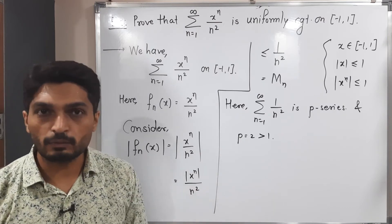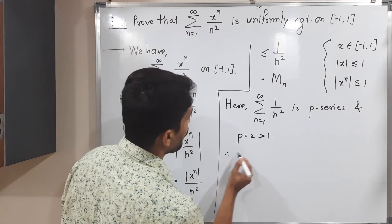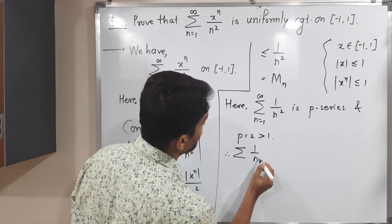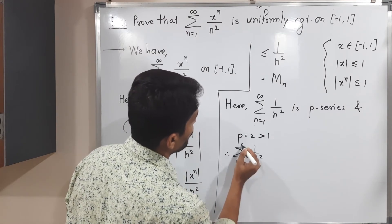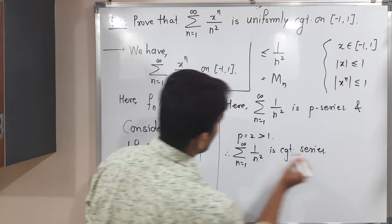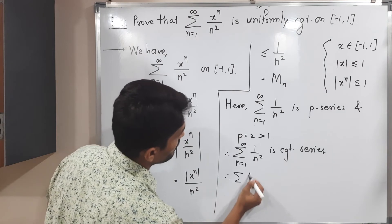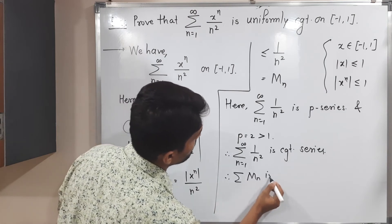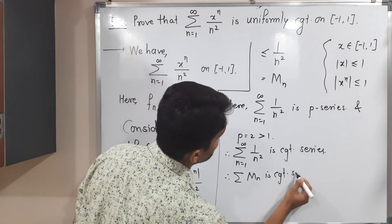Here also p is greater than 1, so therefore I can say it is convergent series. Summation 1 upon n square, n running from 1 to infinity, is convergent series. It means summation mn is convergent series.